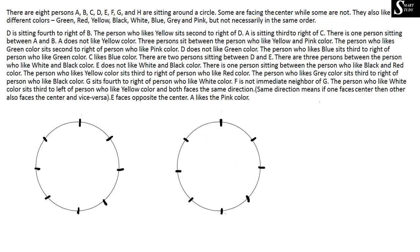The first information is: D is sitting fourth to the right of B, so B's fourth right must be D. Since we don't know if B is facing center or outward, both cases must be considered. If B is facing center, B's right goes in one direction and counting 1, 2, 3, 4, D is placed there. If B is facing outward, B's right is the opposite direction, and counting 1, 2, 3, 4, D is placed accordingly.